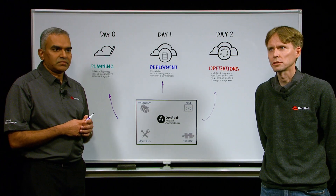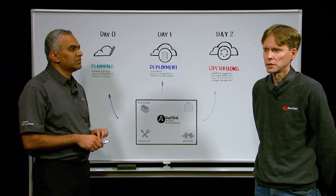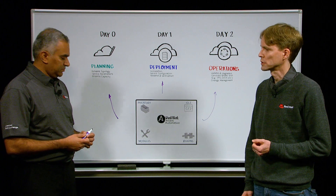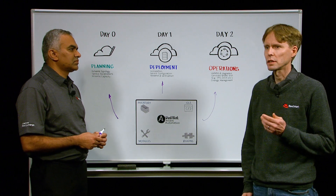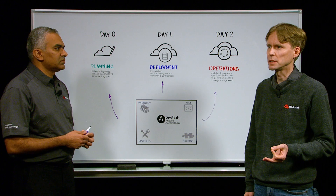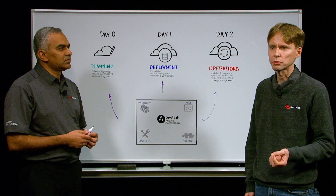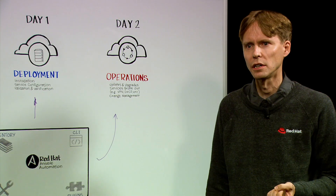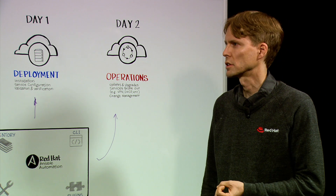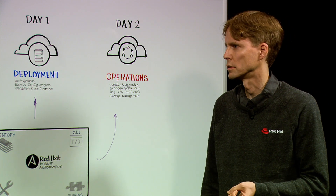Likewise, let's consider a conference. The needs of a conference have peaks and troughs. There will be high demand for network services such as DHCP and DNS during things such as registration or even during major keynotes. And there will be lower demand during evening sessions or during breaks, for example.